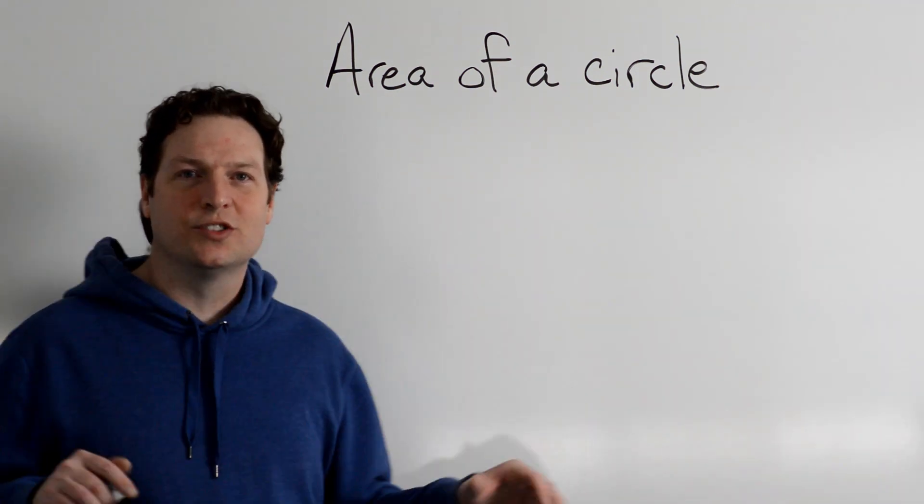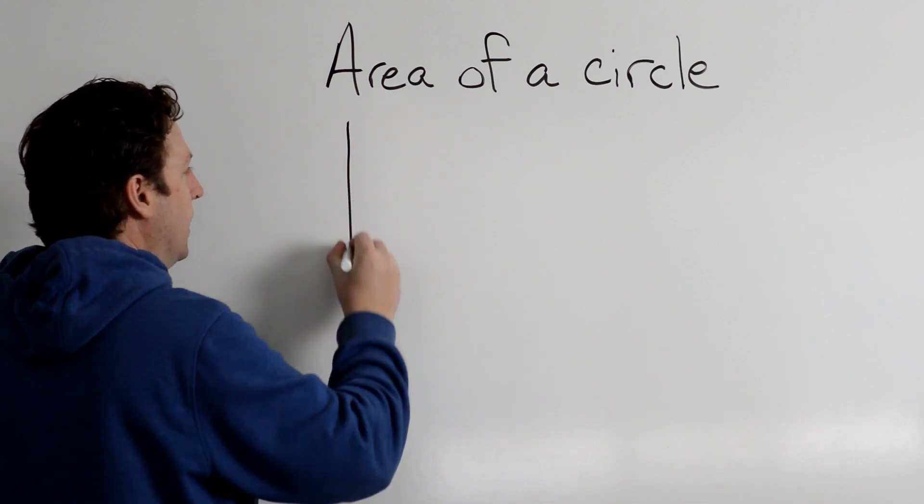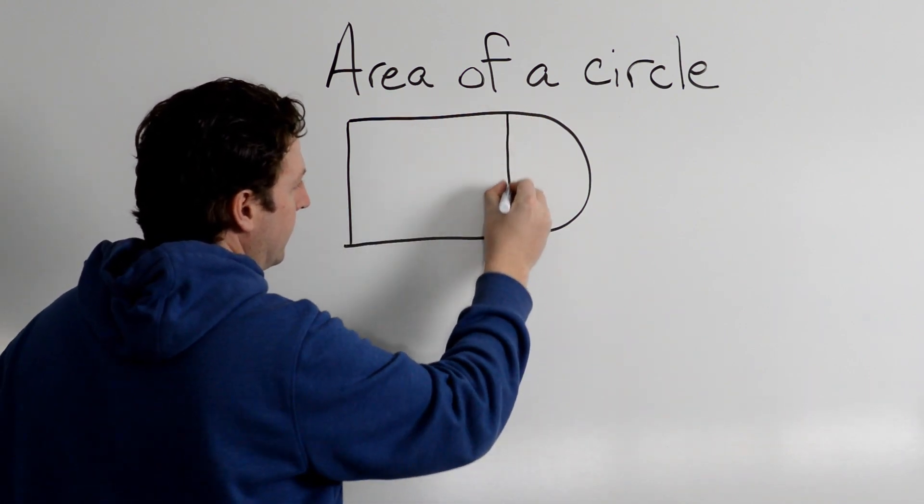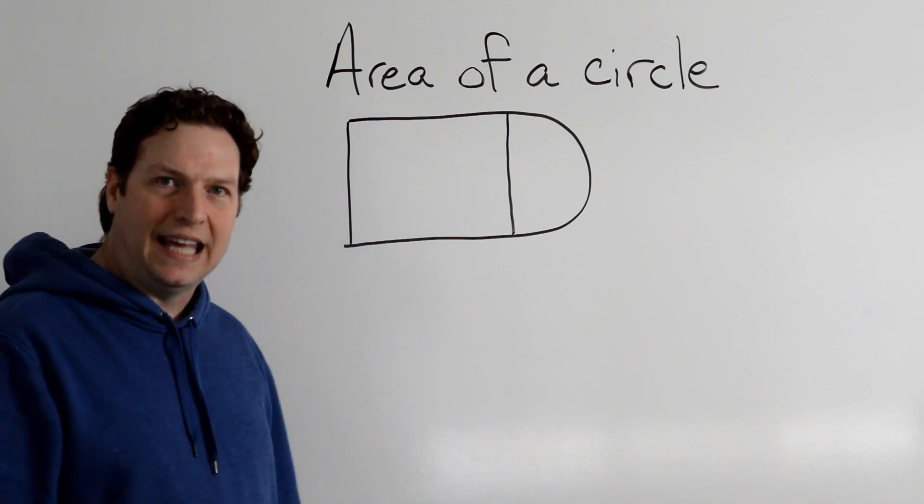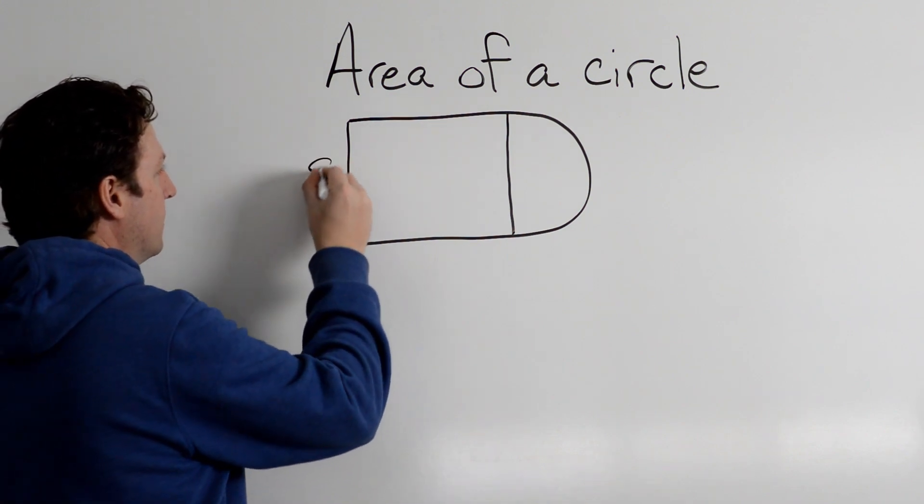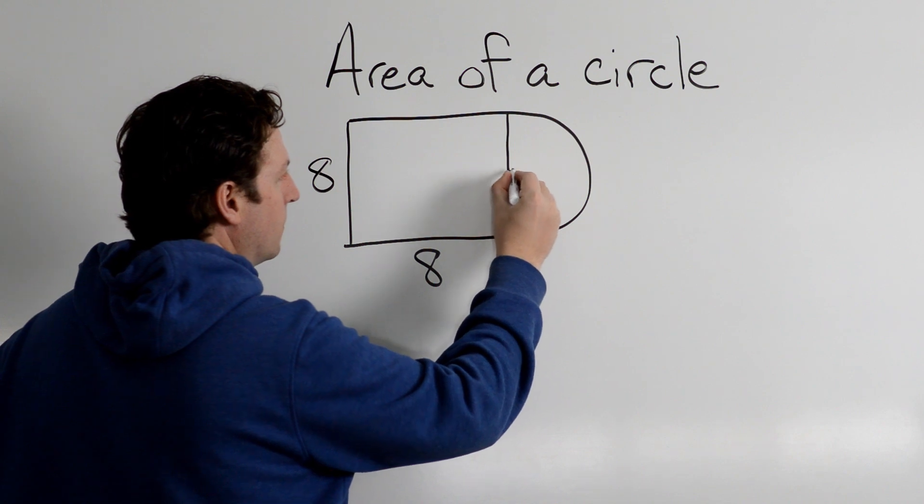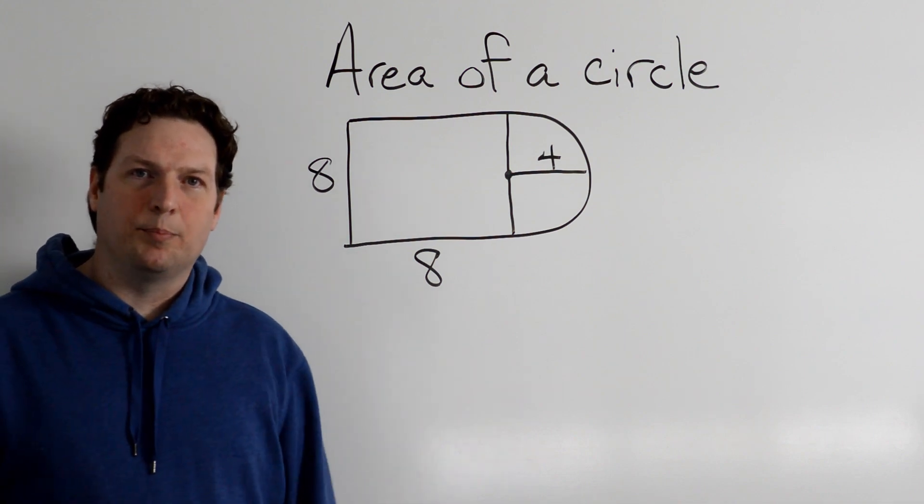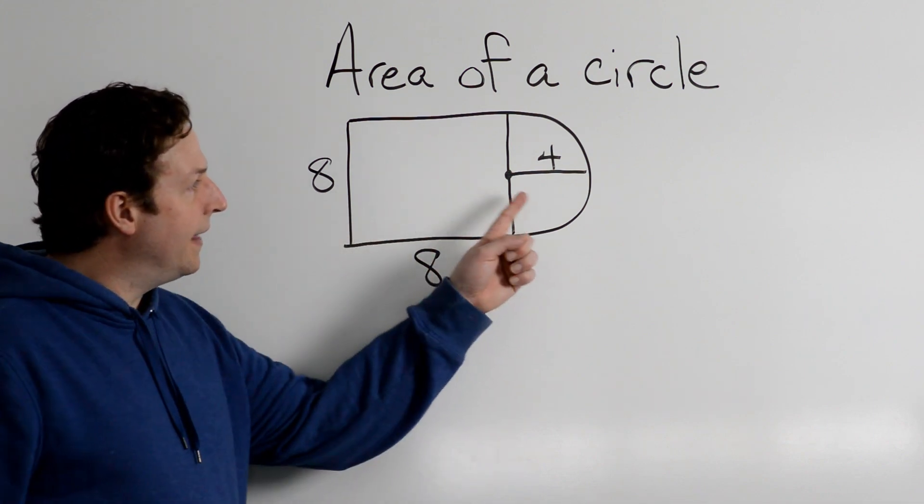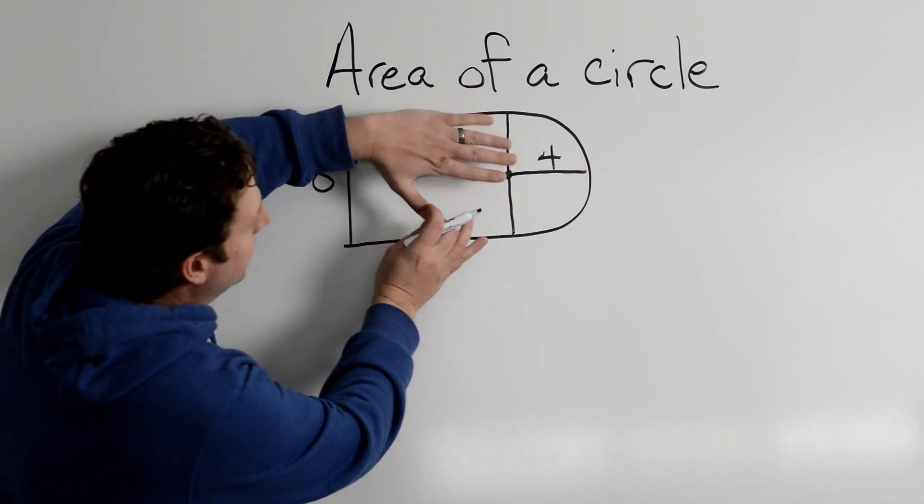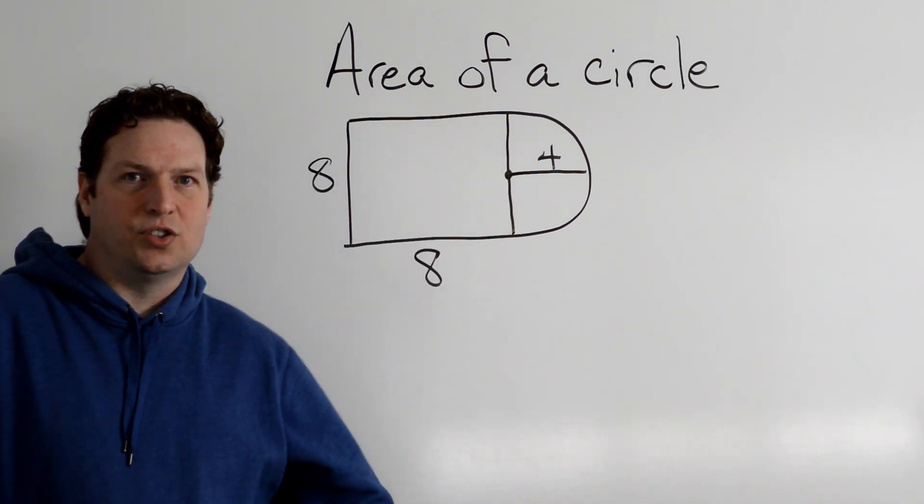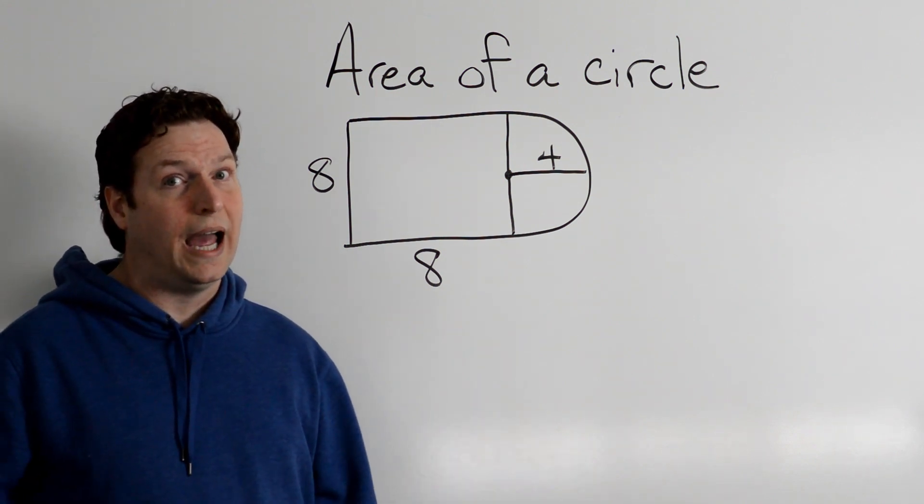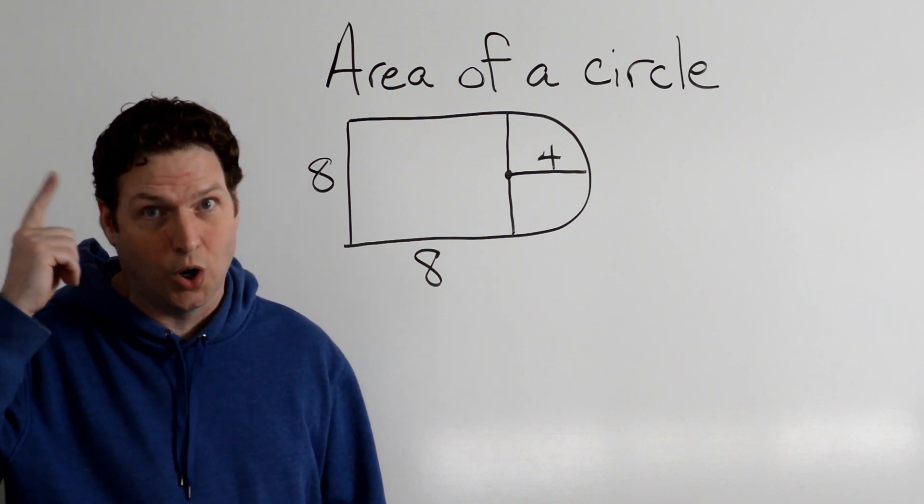The last thing we are going to do is look at a really common area problem where you might be given a shape like this and you are asked to find the area. And it's really just two area problems at once. We have a square and then we have a circle, but we have half of a circle. So we are going to need to think about it and use our heads on this one. And remember, sometimes when solving problems, you have to use your head.